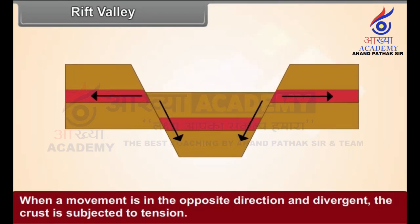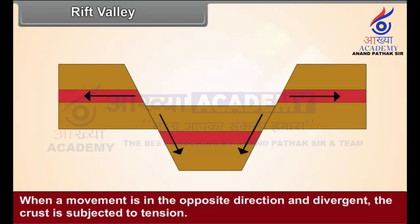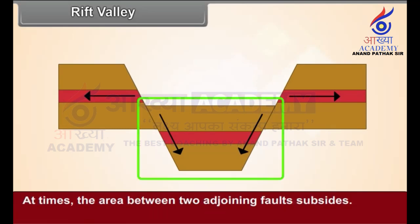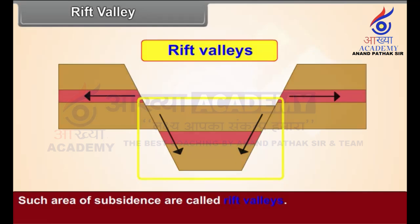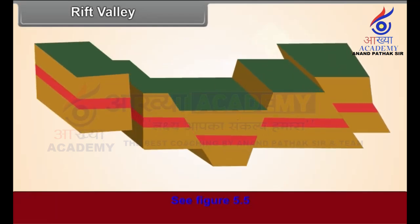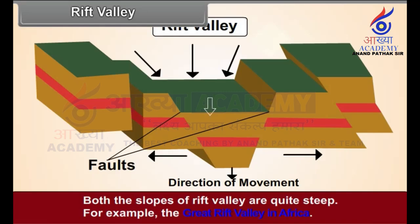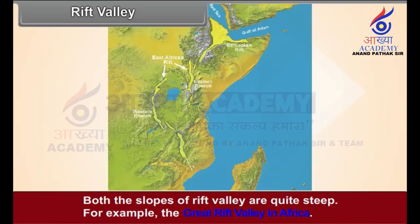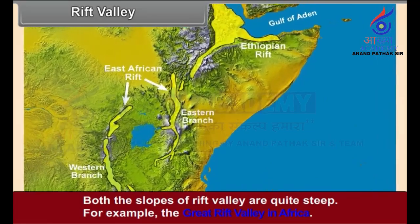Rift Valley: When the movement is in the opposite direction and divergent, the crust is subjected to tension. At times, the area between two adjoining faults subsides. Such areas of subsidence are called rift valleys. See figure 5.5. Both the slopes of rift valleys are quite steep. For example, the Great Rift Valley in Africa.